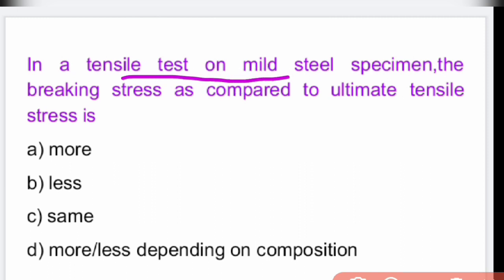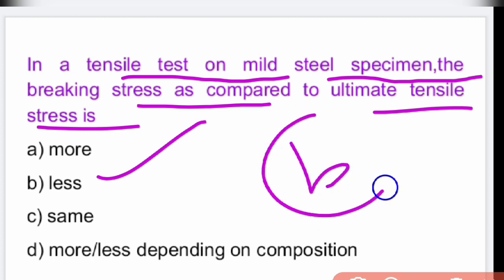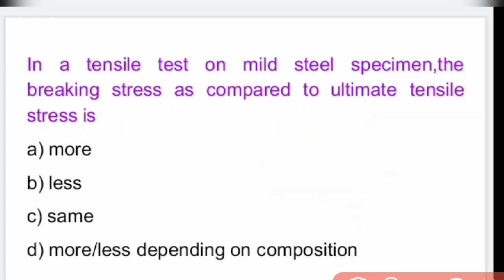In a tensile test on a mild steel specimen, the breaking stress as compared to ultimate stress is always less. The breaking stress is always less than the ultimate tensile stress — option B.